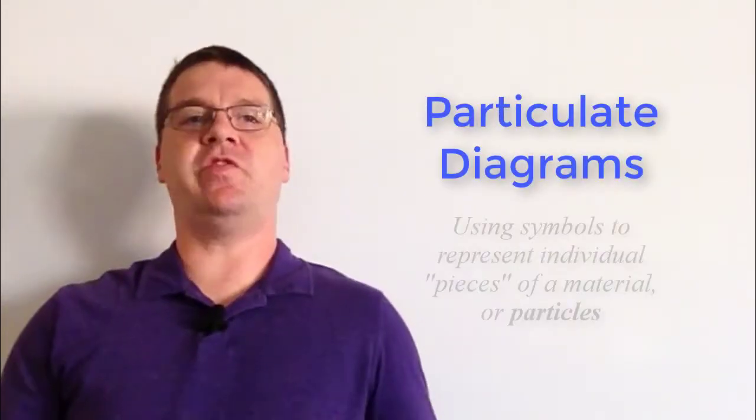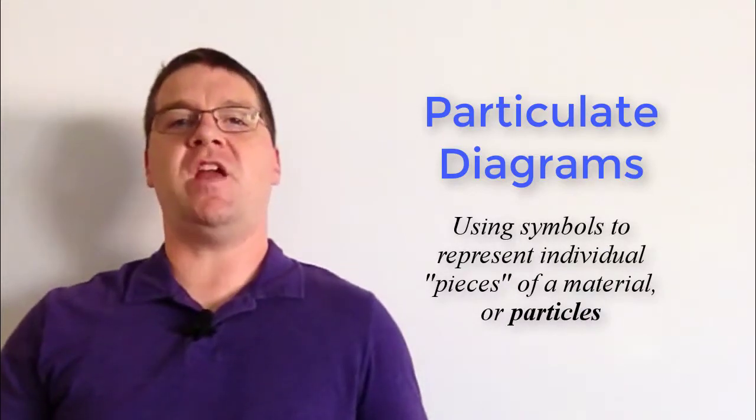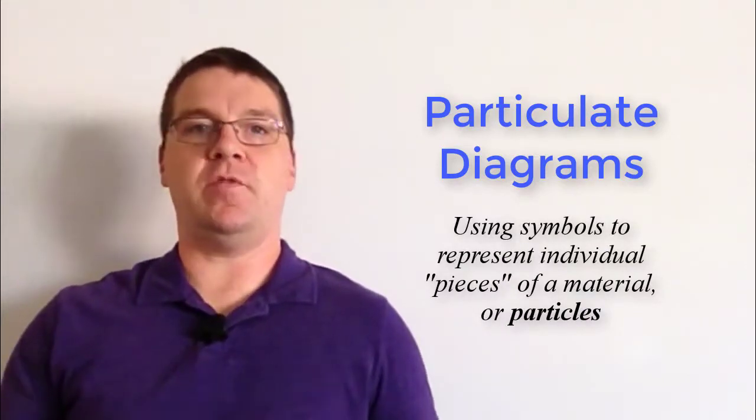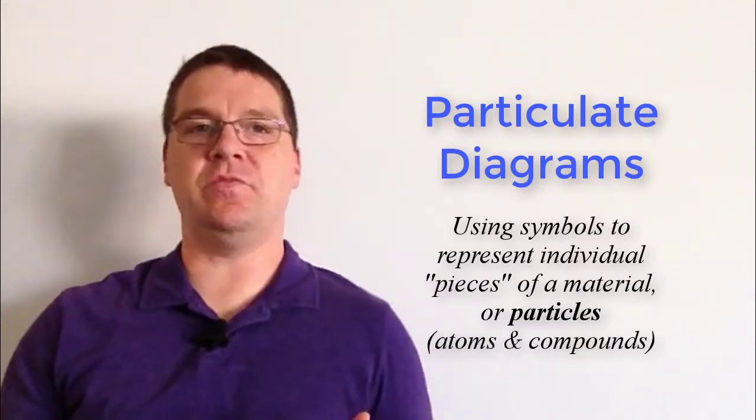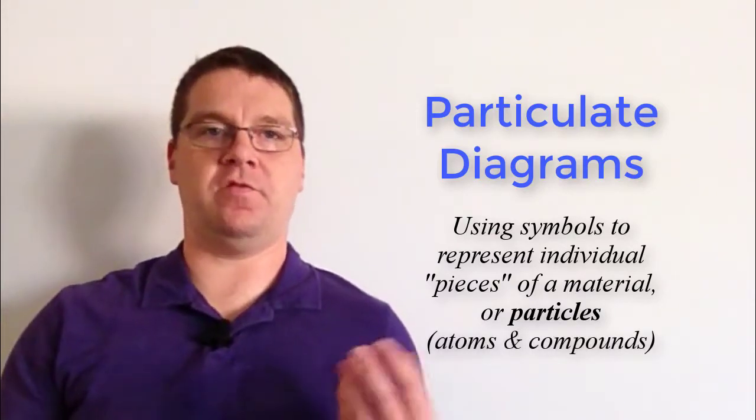In a particulate diagram we use symbols to represent the different individual pieces of a material. The two most common types of particles that we might have are atoms, which would be just a single type of particle.